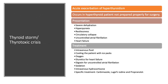Thyroid storm, or thyrotoxic crisis, is a life-threatening complication — an acute exacerbation of hyperthyroidism occurring when the hyperthyroid state is not controlled before thyroidectomy. The patient presents with features of severe dehydration, hyperpyrexia, restlessness, circulatory collapse, uncontrolled atrial fibrillation, and heart failure. Treatment involves IV fluids, cooling with ice packs, oxygen, diuretics, digoxin, sedation, and IV hydrocortisone. Specific treatments are carbimazole, Lugol's iodine, and propranolol.